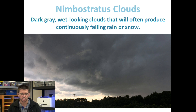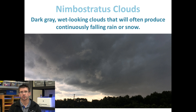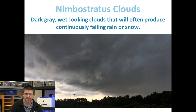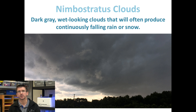Nimbostratus clouds don't stretch out as far as stratus clouds do, but they're dark, really wet-looking clouds that typically will give us some pretty continuous periods of precipitation.